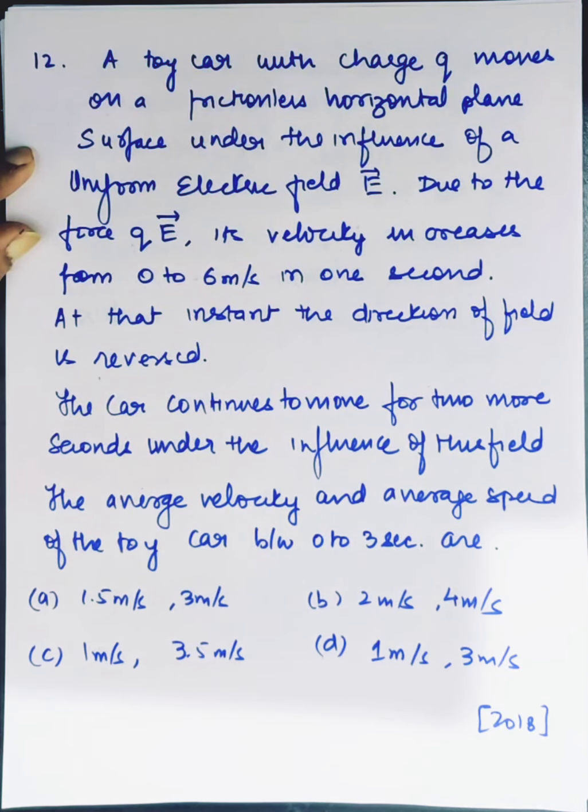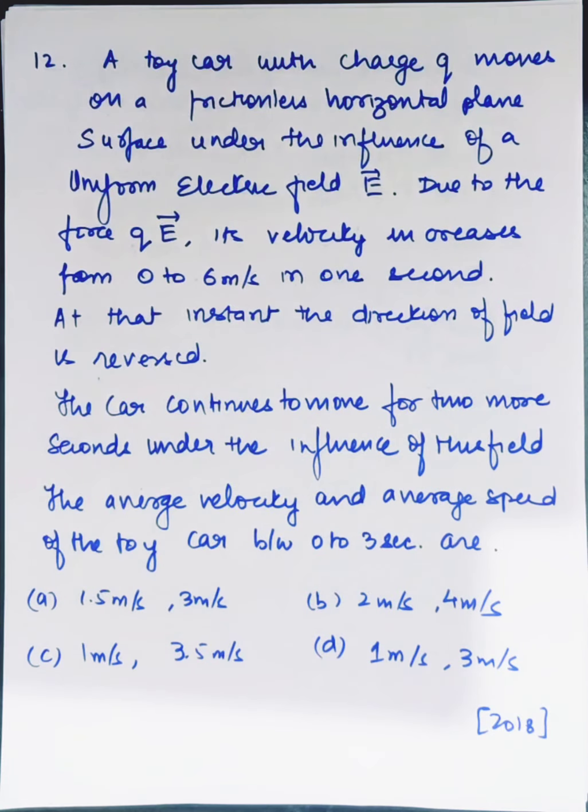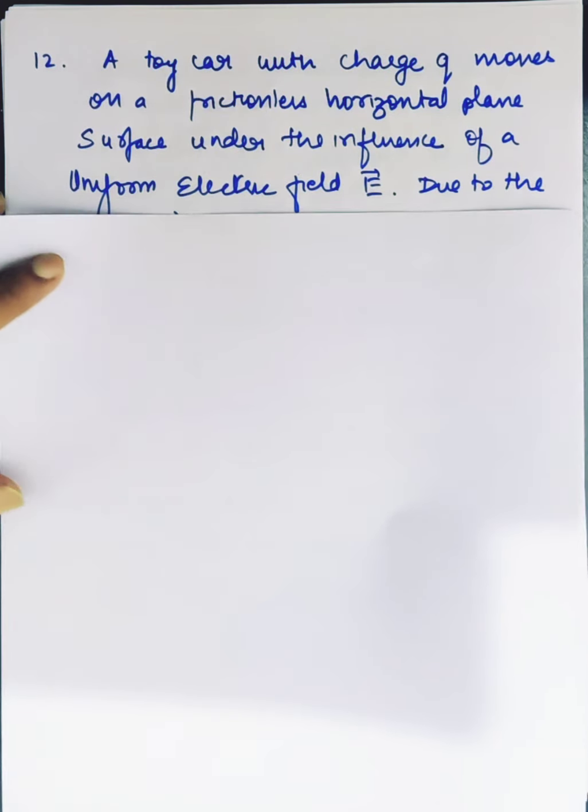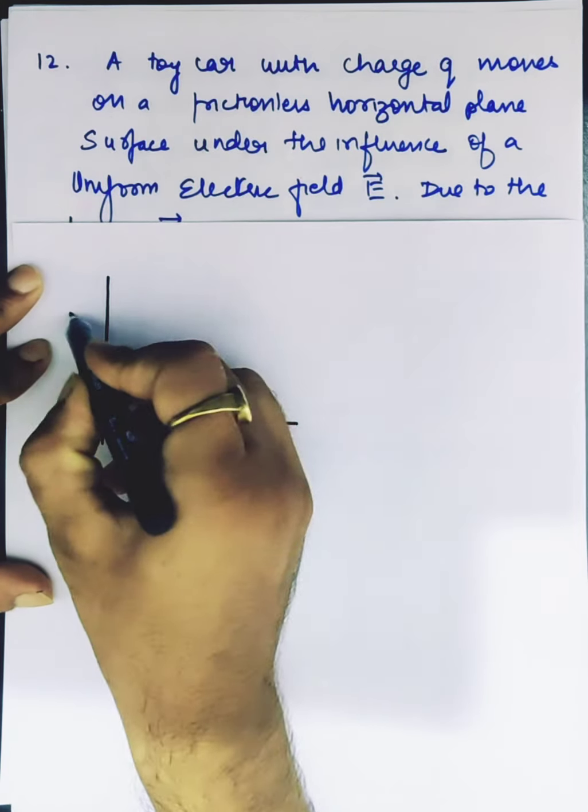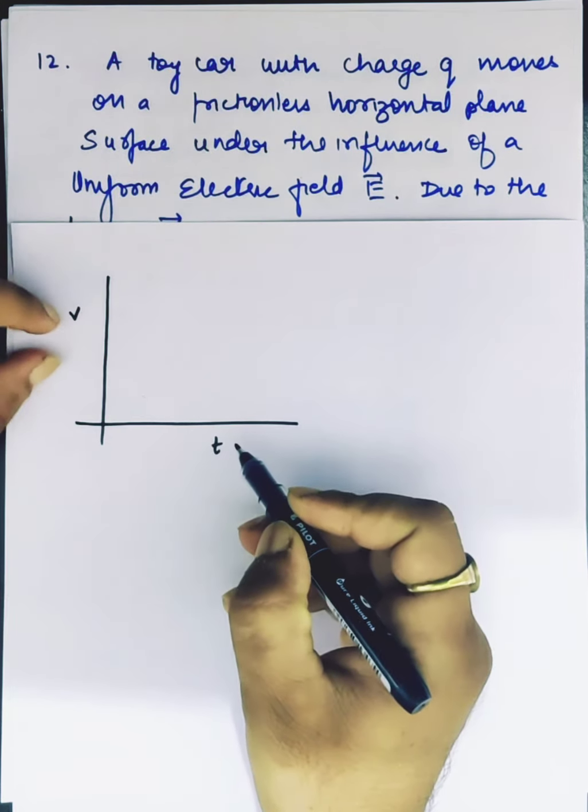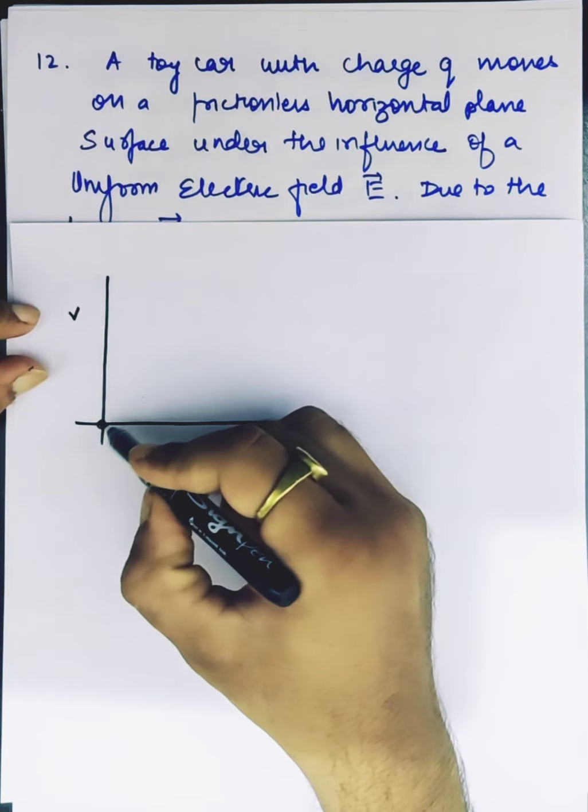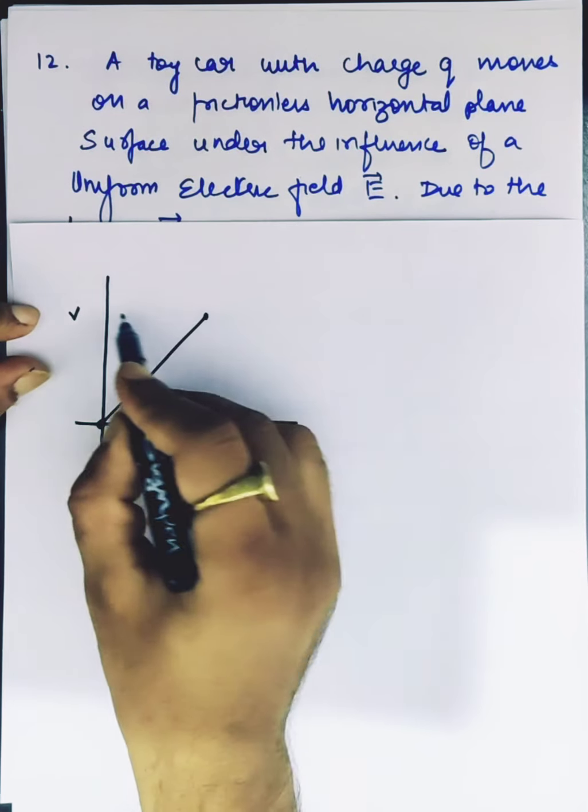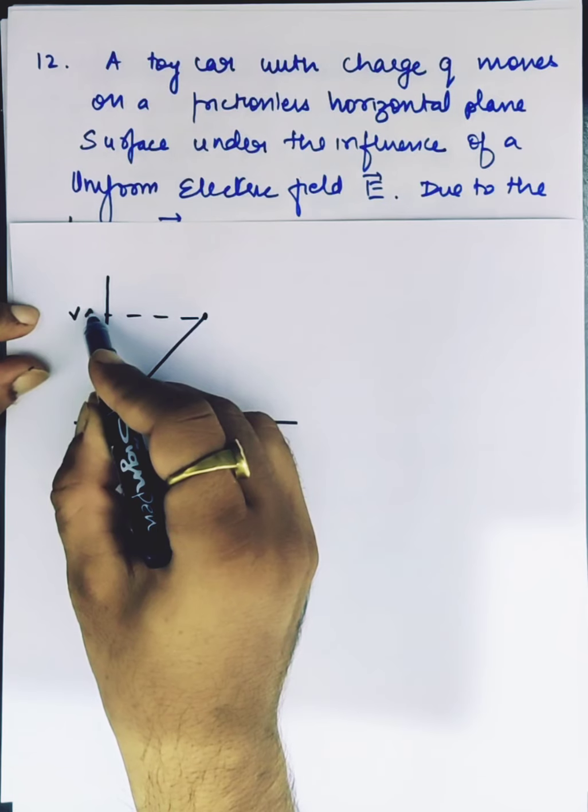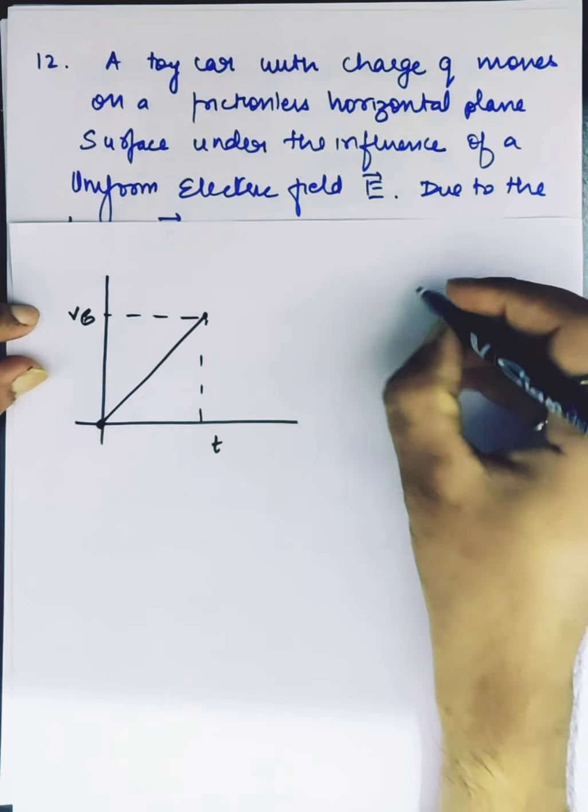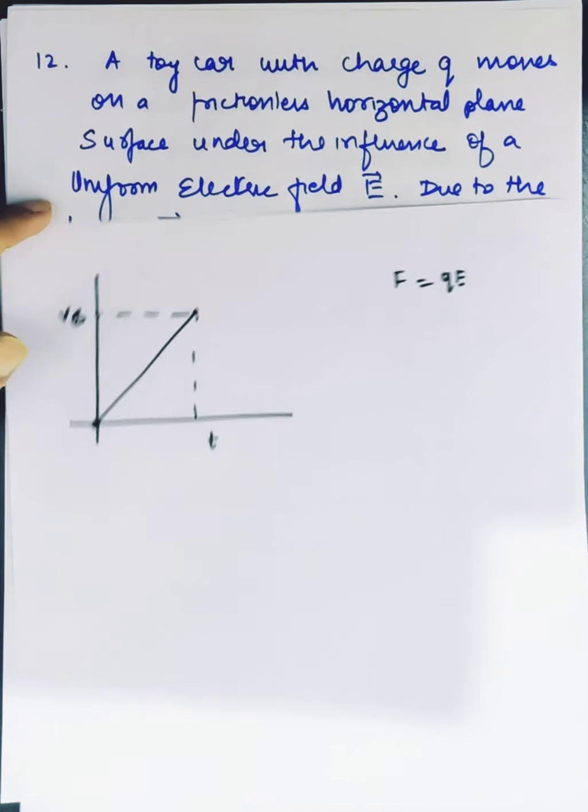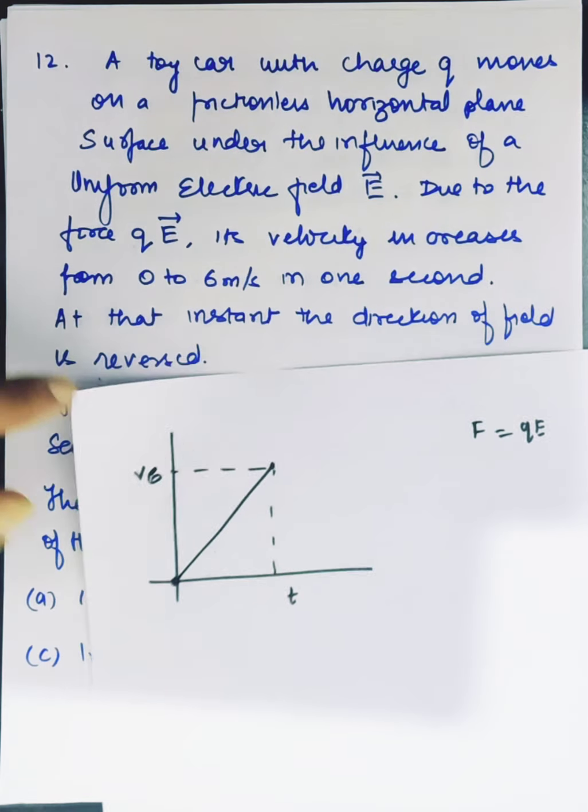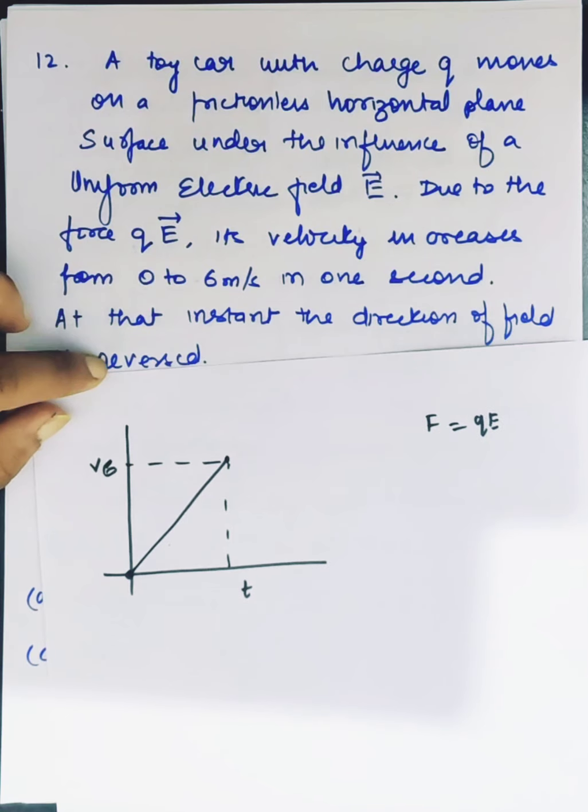Here is a toy car with charge. We can only show the charge. Let me draw a velocity-time graph. In the first second, the velocity is 0 to 1. It is 6 at 1 second. The force is equal to QE. This is why.